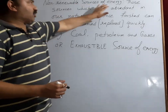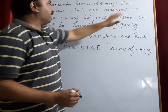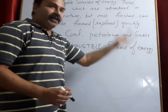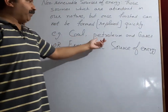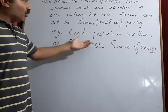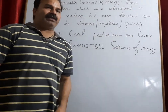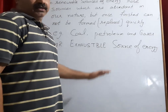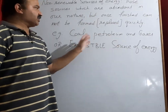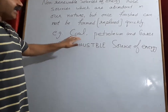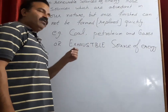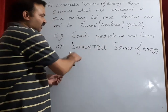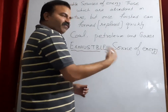Non-renewable sources of energy are those sources which are abundant in nature but once finished, cannot be formed or replaced again. For example, coal, petroleum, and gases. They are formed deep under the earth under high pressure and high temperature, and it takes millions of years to form them. They are abundant in nature, but once we use up all these fuels, we cannot get them again. So they are also known as exhaustible sources of energy.